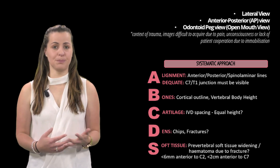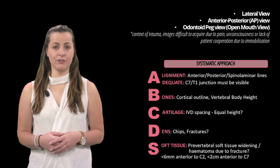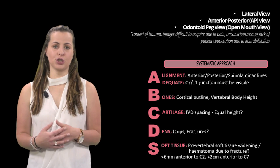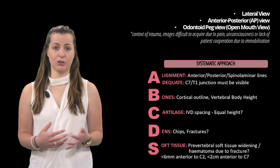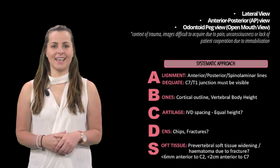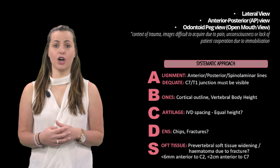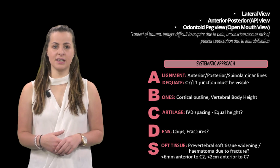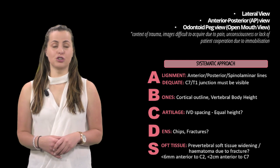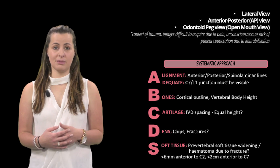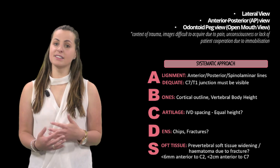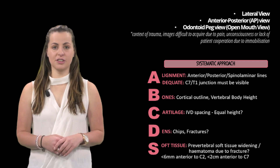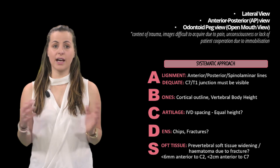Lastly, soft tissue: some fractures can cause widening of the prevertebral tissue due to hematoma, however lack of thickness should not be reassuring and CT follow-up should be required. Prevertebral swelling is defined as approximately two-thirds of the adjacent vertebral width. Quantitatively, the prevertebral space should be equal to or less than seven millimeters anterior to C2 and less than two centimeters anterior to C7. The edges of the scan should also be examined to check all other visible structures.